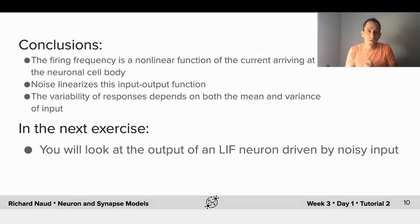So to conclude, the firing rate response of a leak-integrated fire model is a non-linear function of the current that is arriving to the neuronal cell body. Also, noise can linearize, that is, make more linear this input-output function, and the variability of the responses doesn't depend only on the variability of the inputs but depends on both the mean and the variance of the input. So in the next exercise, you'll be exploring this. You'll be exploring how a leaky-integrated fire neuron model driven by noisy input gives rise to various types of output.